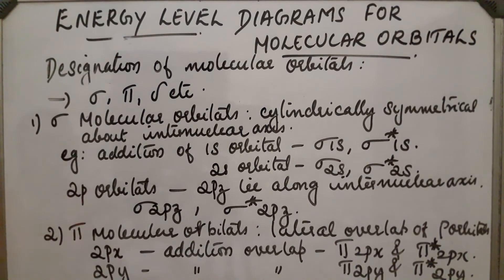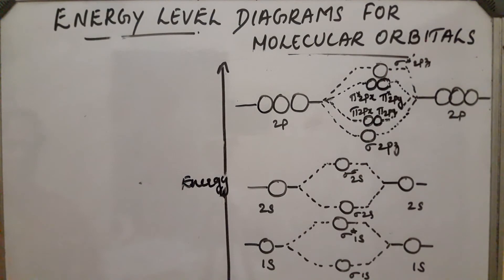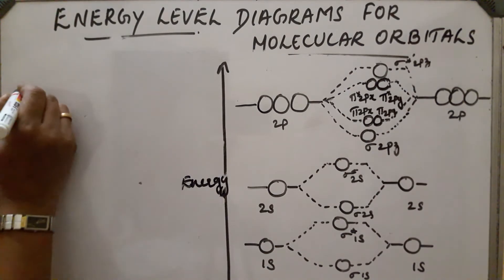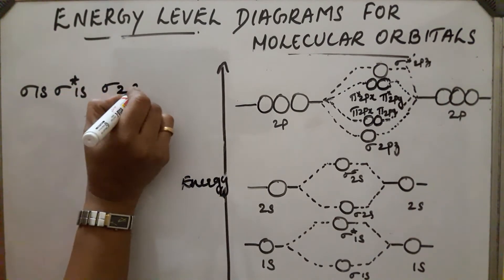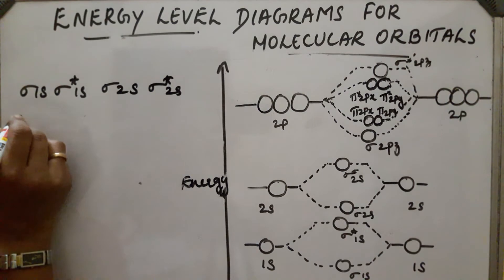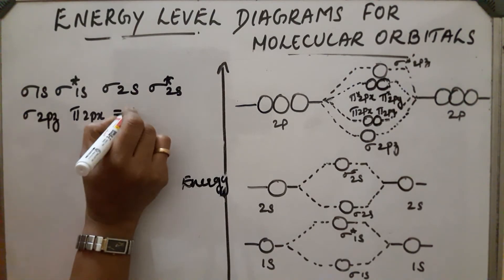Like this, we can designate the different molecular orbitals. Now let us draw the energy level diagram for molecular orbitals. In the case of 1s atomic orbitals, it contains two molecular orbitals: sigma 1s and sigma* 1s. Then 2s contains sigma 2s and sigma* 2s, and so on. The increasing order of energies is: sigma 1s, sigma* 1s, sigma 2s, sigma* 2s, then sigma 2pz, then pi 2px and pi 2py at the same energy.